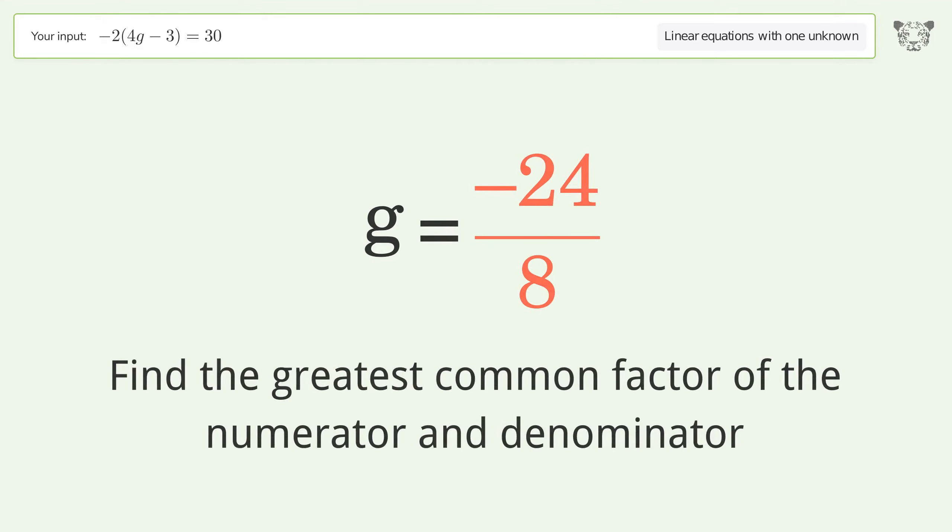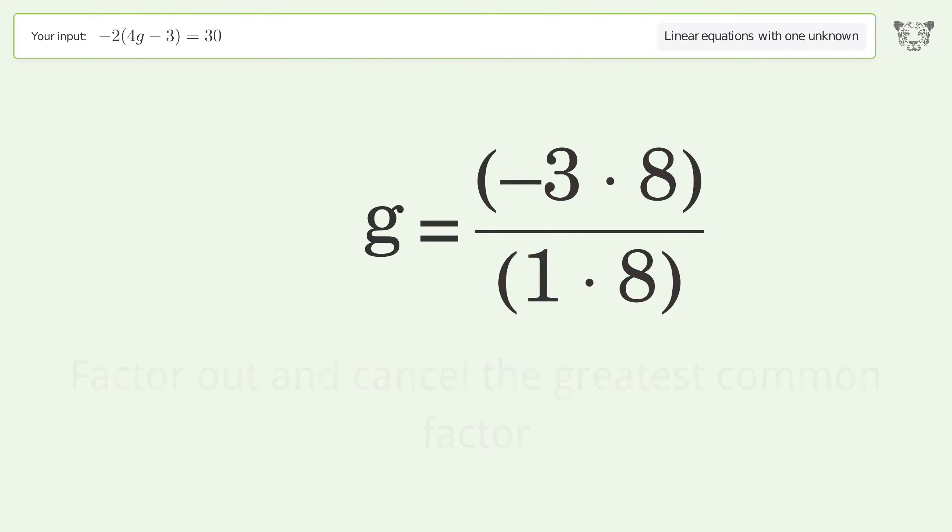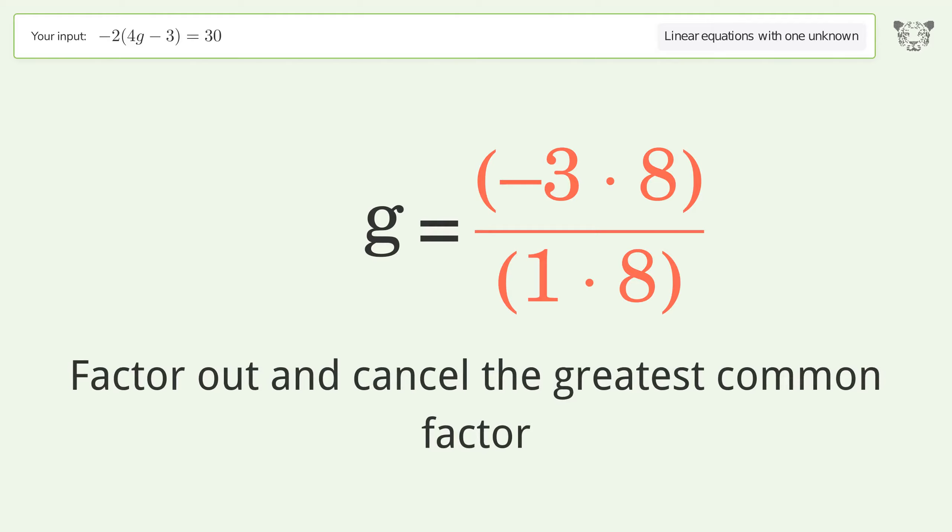Find the greatest common factor of the numerator and denominator. Factor out and cancel the greatest common factor.